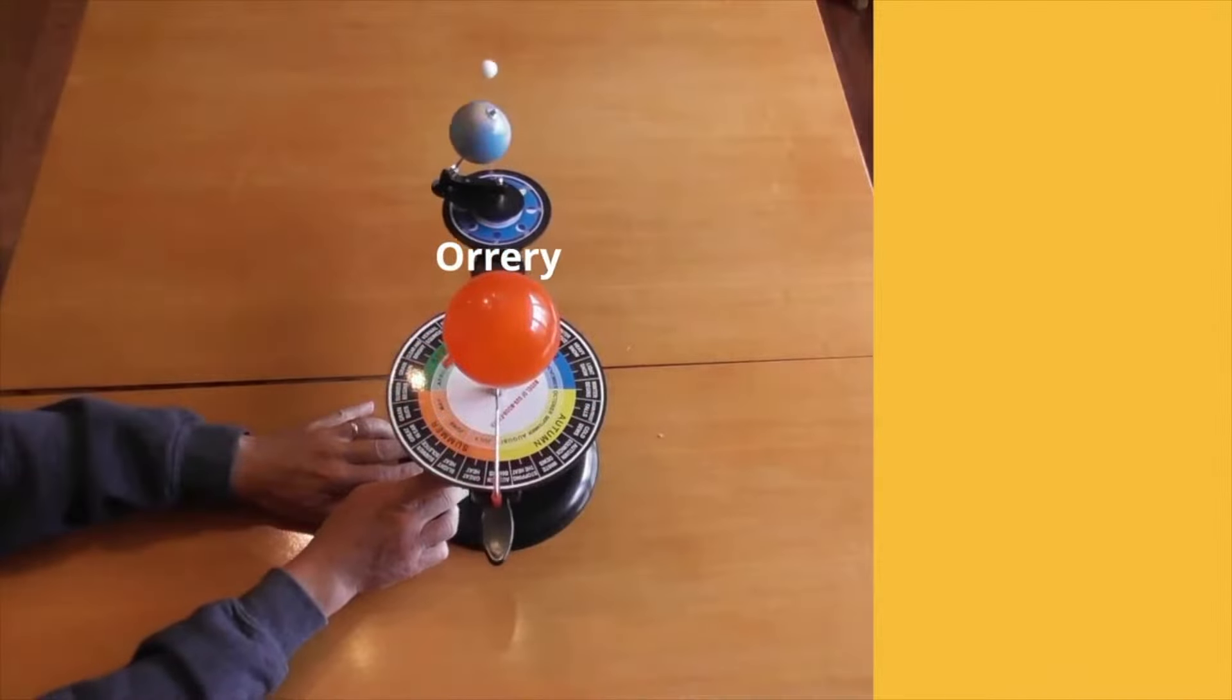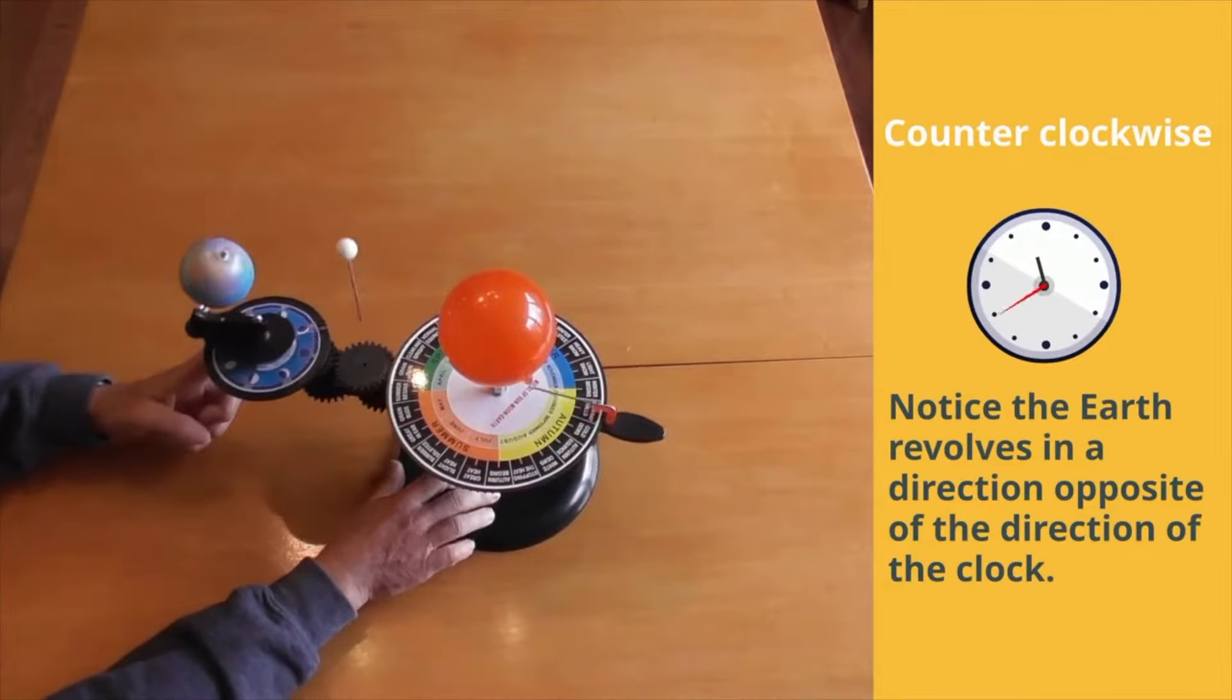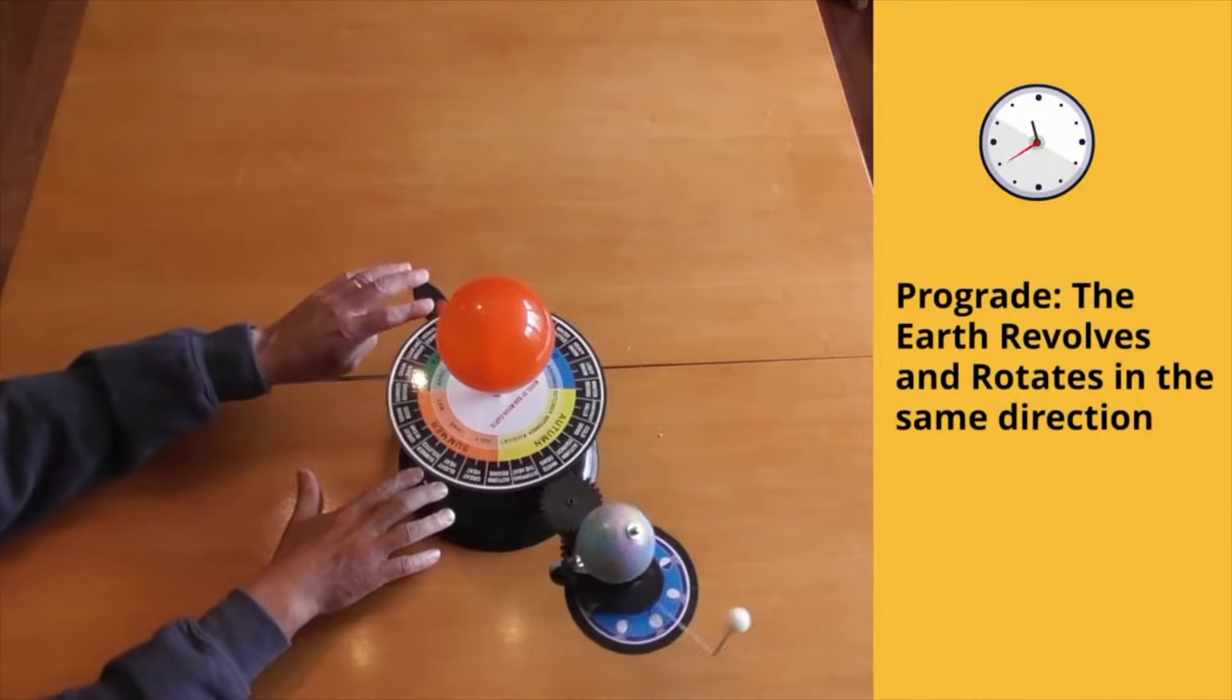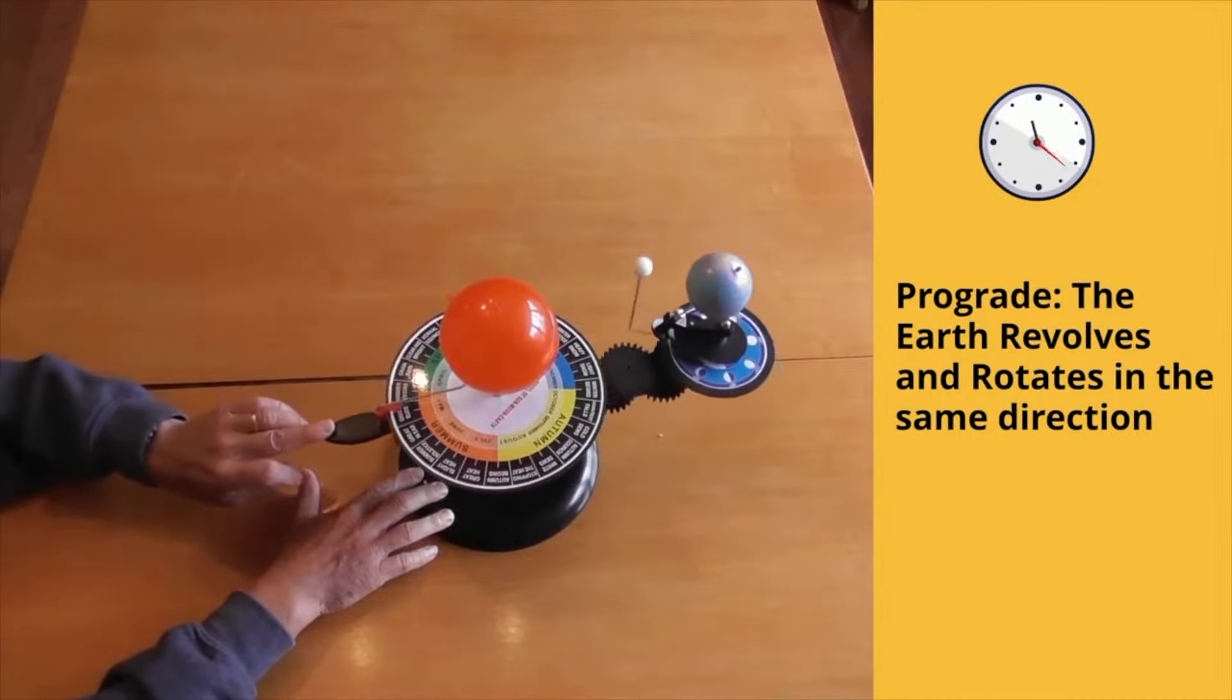The Earth revolves in a counterclockwise direction around the Sun. It also orbits in a prograde manner, which means it revolves and rotates in the same direction, and that is counterclockwise.